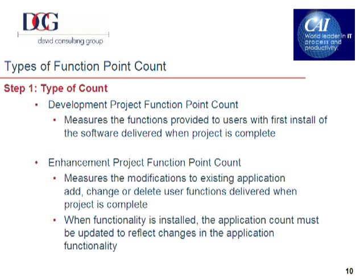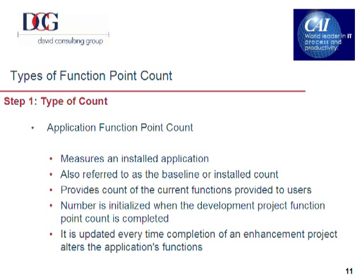When functionality is revised by an enhancement project, the application count must also be updated from the original project count to reflect any changes in the application's functionality. Finally, we have the third type of count, which is the application function point count. An application function point count measures an installed application. It's also called a baseline or an installed count, and it reflects the value of a particular application at the time the count is done. Its number is initialized when the development project is completed, and it's updated every time the completion of an enhancement project changes the application's functions.